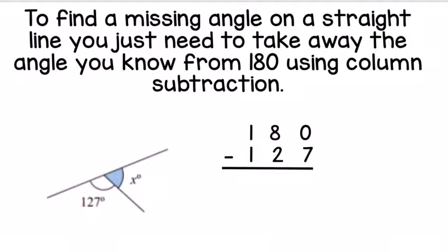To find a missing angle on a straight line, you just need to take away the angle you already know from 180 using column subtraction.